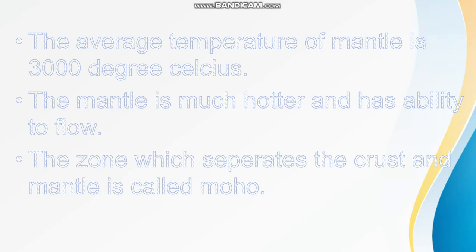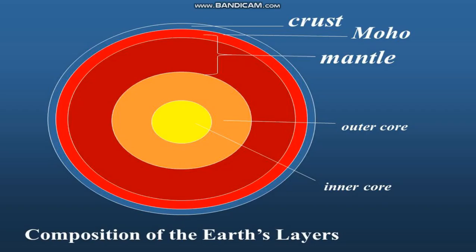There is a zone which separates the crust layer and the mantle layer, and this zone is known as the Moho. You can see here — this is the Moho between the crust and the mantle. This is the zone which separates the crust and the mantle.